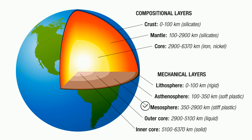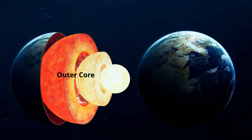The strong lower part of the mantle is called the mesosphere. Rock in the mesosphere flows more slowly than rock in the asthenosphere. The outer core is the liquid layer of the Earth's core, and the inner core is the solid part, extending from the bottom of the outer core to the center of the Earth.